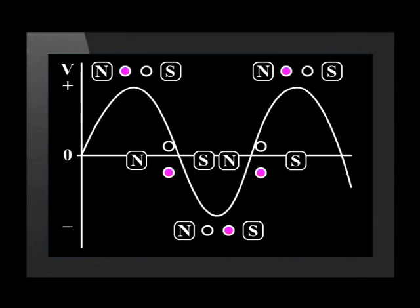Any generator does not produce a constant voltage, and we can use Faraday's law to understand why. When the armature turns, the greatest change of flux occurs when the wires are the closest to the magnets, so the voltage from each generator will change with time.